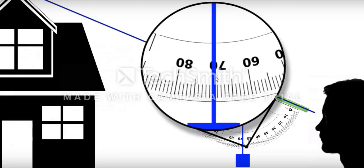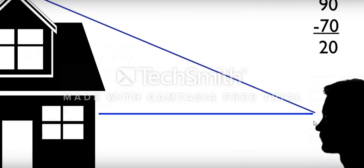So the angle of elevation to the top of the building from your eye level is 20 degrees, because the wire was at 90 degrees first and now it is 70 degrees. The difference between 90 and 70 is 20, so the angle of elevation to the top of the building is 20 degrees.